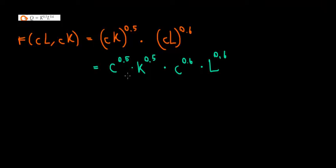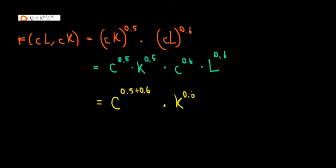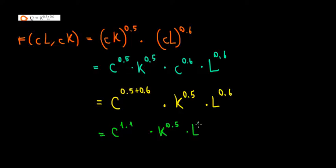Now let's group the C terms together to see what the proportion is going to be after we increase the inputs. C to the power 0.5 times C to the power 0.6 — same base, add the powers — that's C to the power 0.5 plus 0.6. And then we're left with K to the power 0.5 and L to the power 0.6, which is our original production function, our original Q.